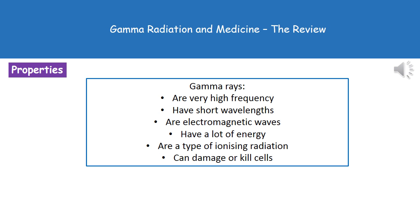We need to be aware of a few of the properties of our gamma rays. First, they're very high frequency and have short wavelengths. They are examples of electromagnetic waves. They've got a lot of energy and they're a type of ionizing radiation. The last point is that they can damage, or even kill, cells.